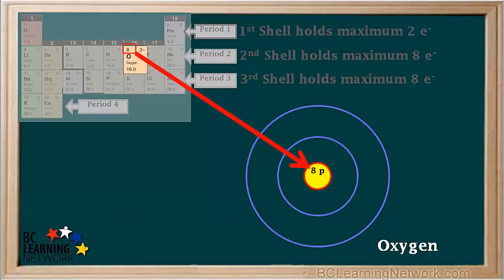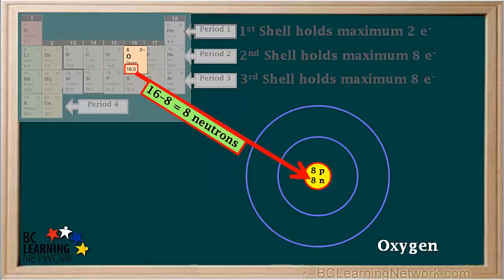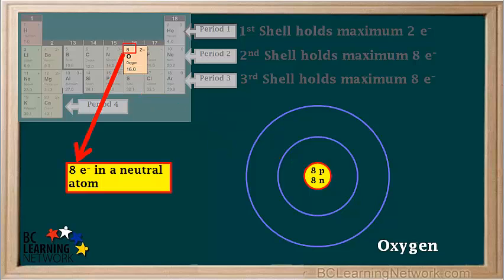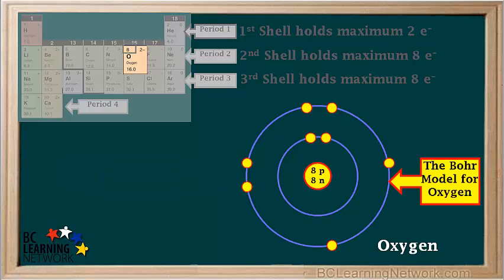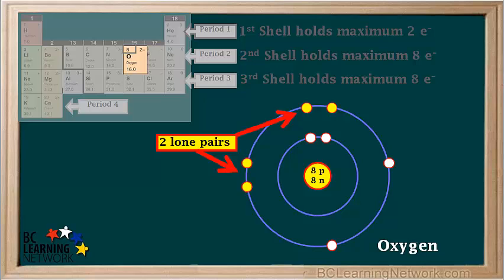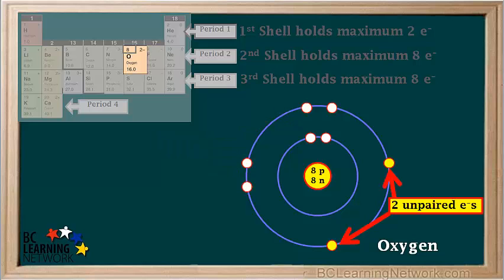Oxygen has eight protons, and the most common form has 16 minus 8 equals 8 neutrons in its nucleus. A neutral oxygen atom has eight electrons arranged in the second shell with two lone pairs shown at right angles to each other, and two unpaired electrons also at right angles to each other. This is the most useful Bohr model for oxygen.